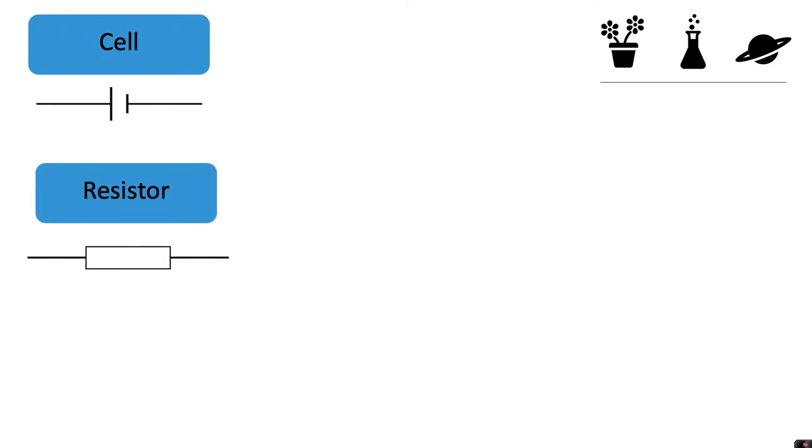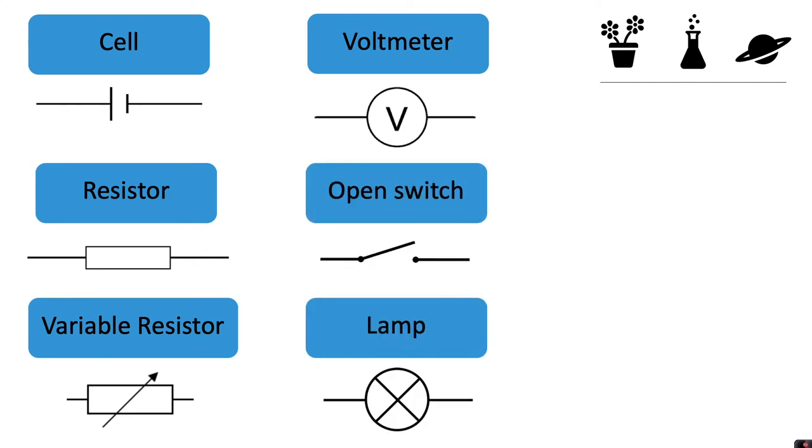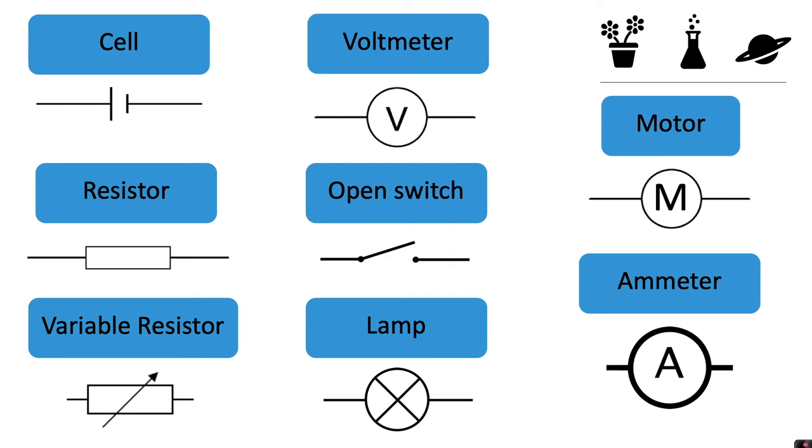Some of the common circuit symbols that you need to be aware of include a cell, a resistor, a variable resistor, a voltmeter, an open switch, a lamp, a motor, and an ammeter. There are many more components but these are just some of the common ones that you might use at key stage 3.